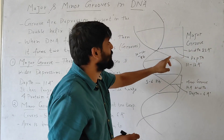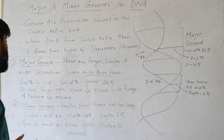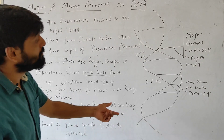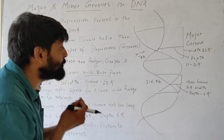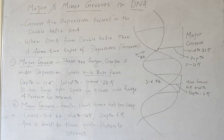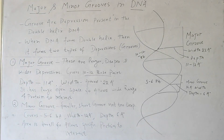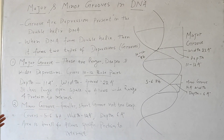Since the major groove has a large open area, it can interact with a large number of proteins. But in the minor groove area, there is a very small open area, so it can interact with only a specific small number of proteins. So these are the major and minor grooves — depressions present in the double helix. They are of two types: major, which are wider and deeper depressions, and minor, which are smaller and shallower depressions.